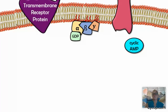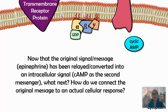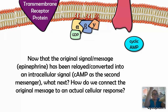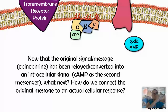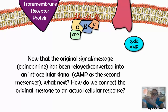At this point, we still haven't brought about a cell response. All we've done is taken the first message — epinephrine attaching — and through a series of proteins interacting with each other inside the cell, we've produced a second messenger: cyclic AMP. Now we have to connect that to an actual cell response.